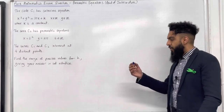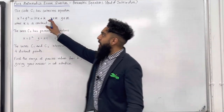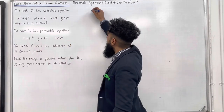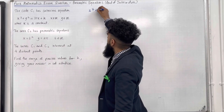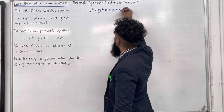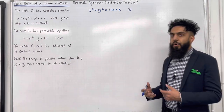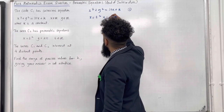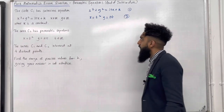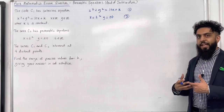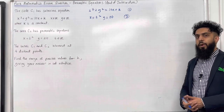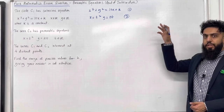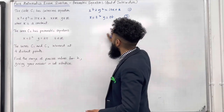Let's have a look at the solution. We've got curve C1 represented by this Cartesian equation intersecting curve C2 represented by this parametric equation. The Cartesian equation x squared plus y squared equals 10x plus k — we can call it equation 1. The parametric equations x equals t squared, y equals 2t, we can call equation 2. These two curves intersect at four distinct points, so we solve simultaneously by substituting equation 2 into equation 1.